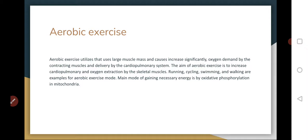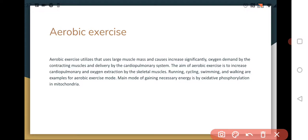Aerobic exercises use large muscle mass and cause a significant increase in oxygen demand. This is the main idea behind aerobic exercise — aerobic means using a lot of oxygen. This is particularly true for endurance exercises like marathon running, where the organism targets big muscle groups to use a lot of energy and produce it as efficiently as possible.